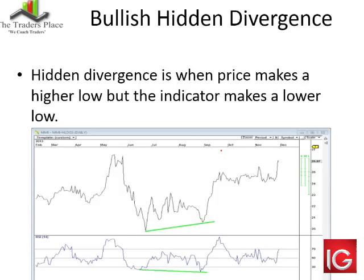Hidden divergence is when the price makes the higher low — the opposite of what we looked at first — but the indicator makes a lower low. The RSI is generally quite good at this type of divergence. It's a little slower than the stochastic, which goes from top to bottom or bottom to top pretty quickly. We had price making the higher low while the RSI broke lower. Importantly, it didn't break the overbought level before going in the oversold direction — we don't want the indicator breaking the opposite overbought or oversold levels.